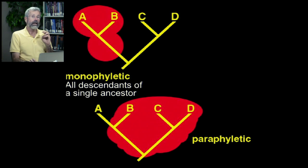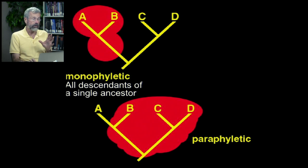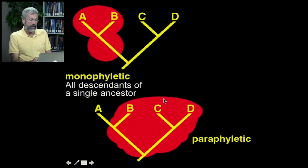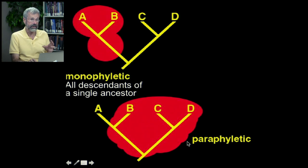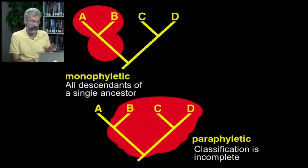If we're not careful, we may be dealing with a classification that is incomplete. So if we were to have a term that included species B, C, and D, but it didn't include A, our classification would be said to be paraphyletic. It's incomplete — the classification is incomplete.